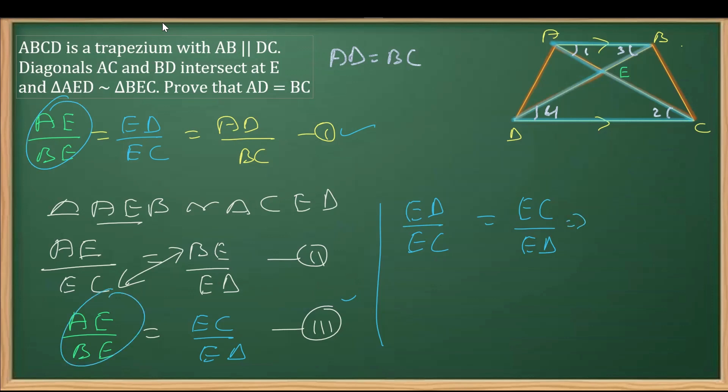From here, if we do cross multiplication, we get ED squared equals EC squared. The squares can be cancelled, so we get ED equals EC.